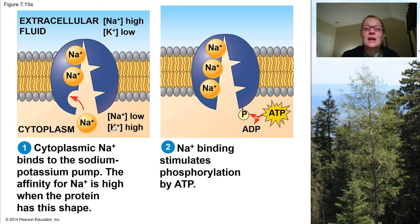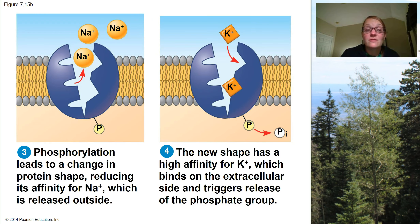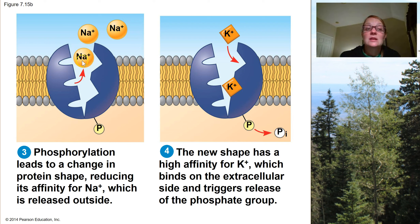The sodium potassium pump is typically open facing the cytoplasmic side of the cell. It will accept three sodium ions to fit into binding sites on the inside of the protein. Next, an ATP molecule comes along and hydrolyzes in the presence of water, donating one of its phosphate groups to the sodium potassium pump. Through the addition of this extra phosphate, the shape of the pump changes and it flips open to the opposite side of the membrane. When it does so, it releases the sodium ions into the extracellular space where their concentration is already high. This frees up space for two potassium ions to bind to the inside of the pump.